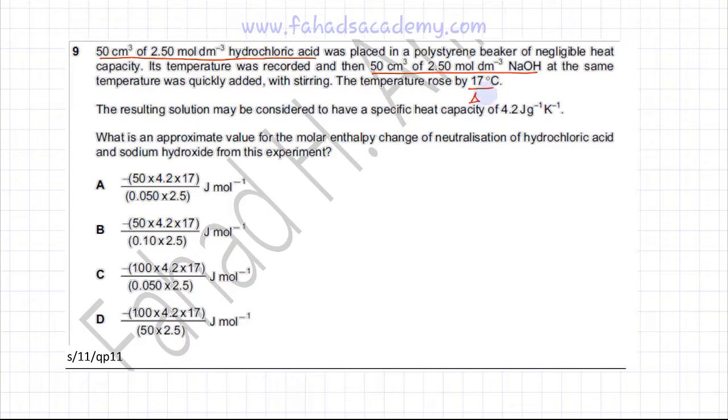Delta T is also known and the resulting solution may be considered to have a specific heat capacity of 4.2 joules per gram per Kelvin. So we also have the specific heat capacity